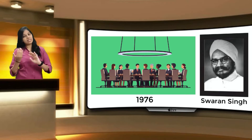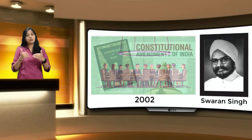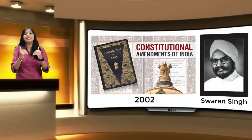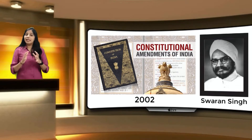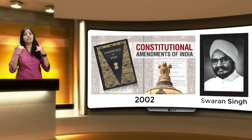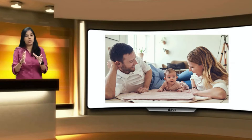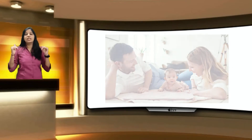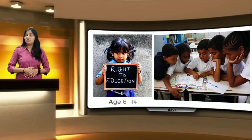When it was added, at that time there were only 10 duties in number. However, in 2002, the fundamental duties were increased to 11 by the 86th Amendment. The 11th fundamental duty added a duty on every parent or guardian to ensure that their child or ward was provided opportunities for education between the ages of 6 and 14 years.